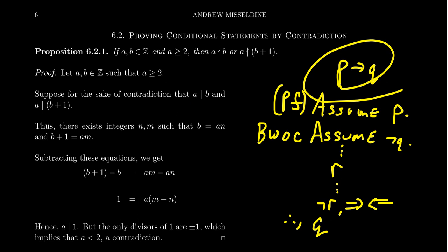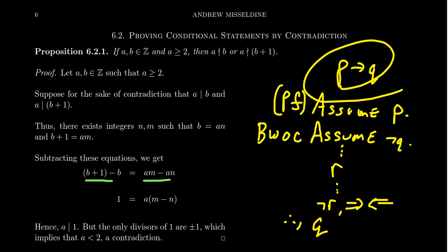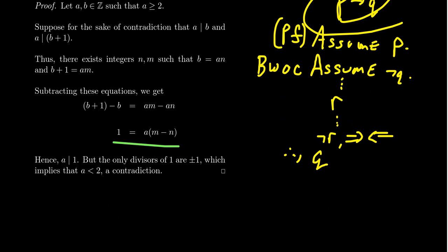If A divides B, there exists an integer N such that B = AN. Likewise, since A divides B+1, there exists an integer M such that B+1 = AM. Subtracting these equations: B+1 − B = AM − AN, giving 1 = A(M − N). This tells us that A divides 1.